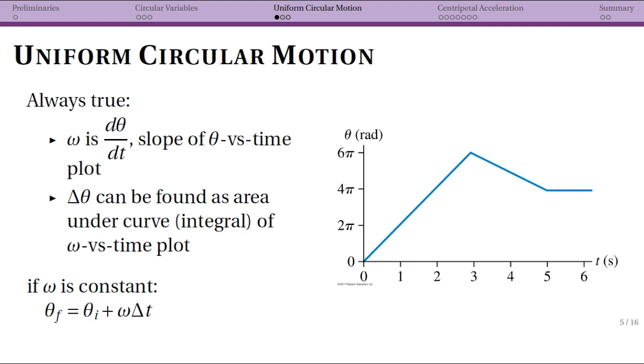One is that our angular velocity, omega, is dθ/dt, and this is analogous to saying that our velocity is dx/dt.